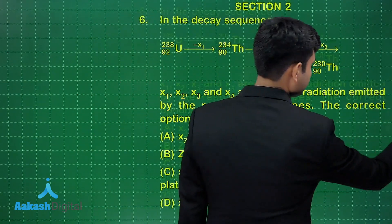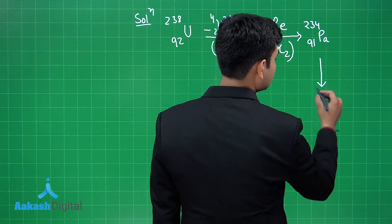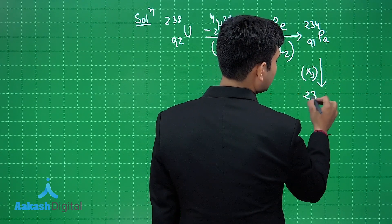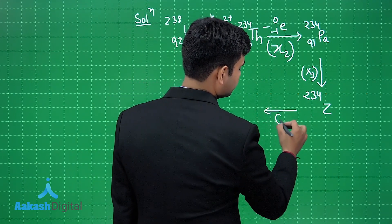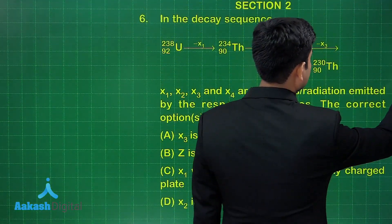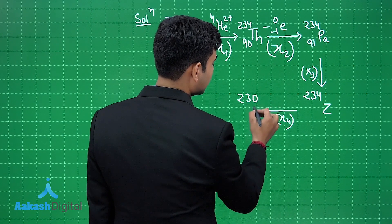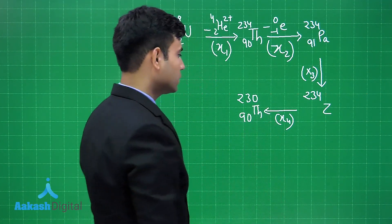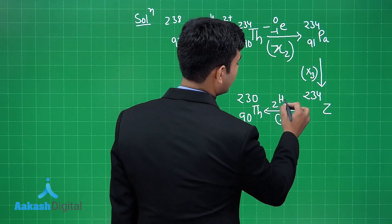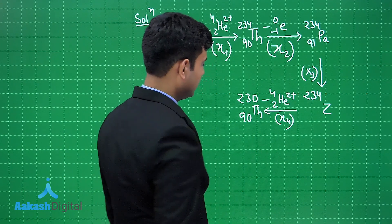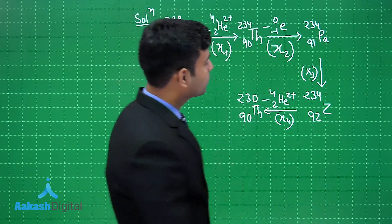For x3, we have ²³⁴Z where the atomic number is not given. Then we have ⁹⁰Th²³⁰ — the mass decreases by 4 units, so x4 must be an alpha particle, ²He⁴. Working back, the atomic number of Z should be 92, so x3 must be a beta particle.